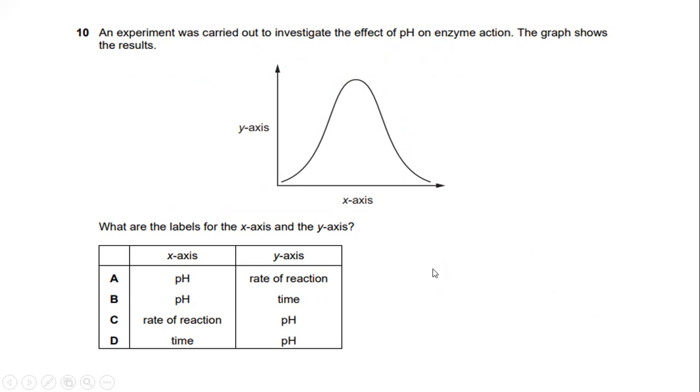Number 10, an experiment was carried out to investigate the effect of pH on enzyme action. The graph shows the result where on the x-axis is the pH and the y-axis is the rate of reaction. So the answer for this question is A. So in this diagram is actually to show how pH affects the enzyme activity. Y is the rate of reaction and X is the pH.